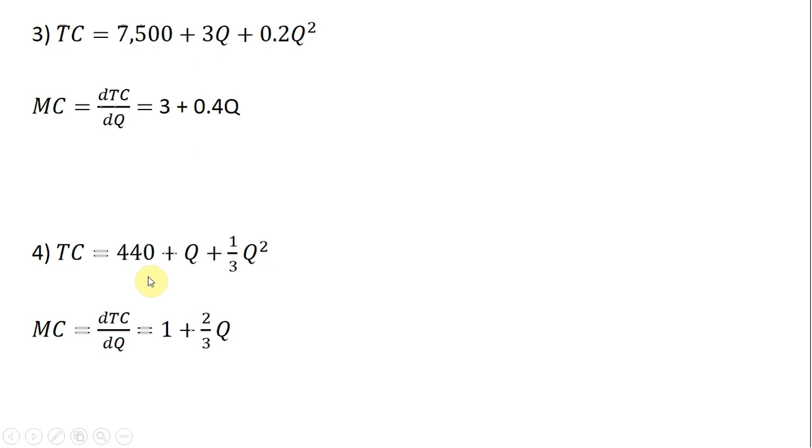Another total cost equation that is also non-linear. The derivative of this gives us marginal cost. The derivative of 440 is 0. The derivative of Q is 1, so that's where the 1 is coming from. And the derivative of (1/3)Q² is (2/3)Q. Bring the 2 down in front, so 2 times 1/3 is just 2/3. And then in the exponent, 2 minus 1 just leaves us Q raised to the power of 1.